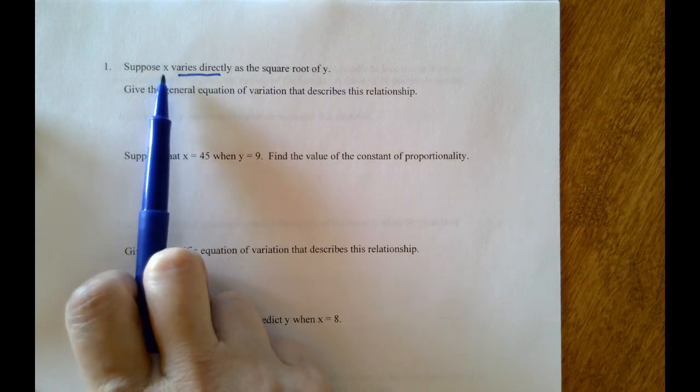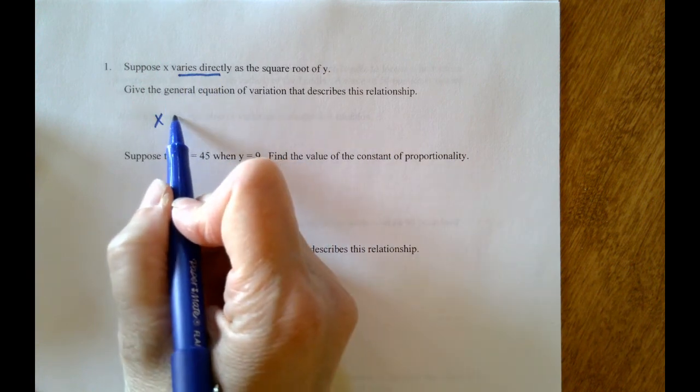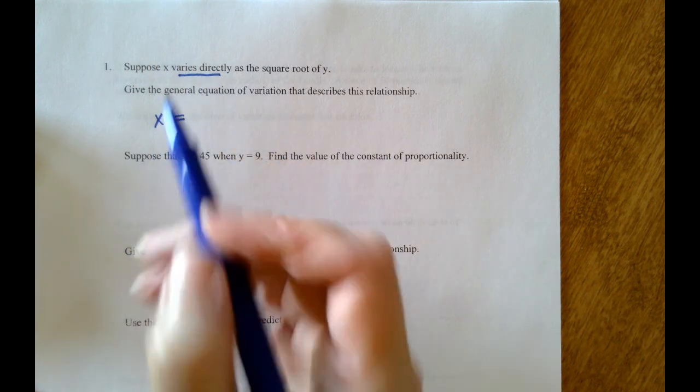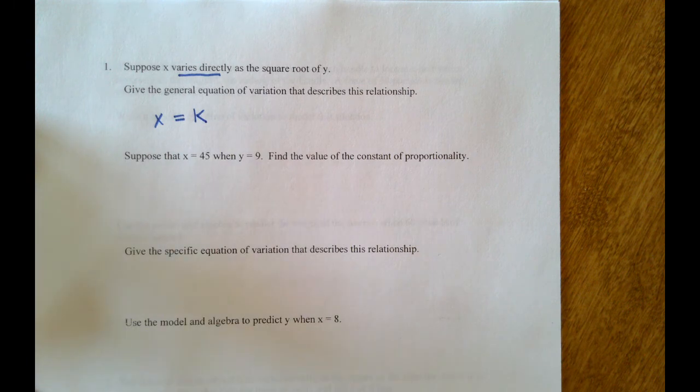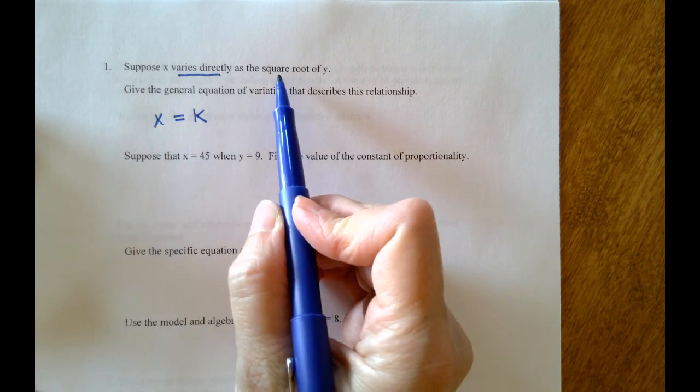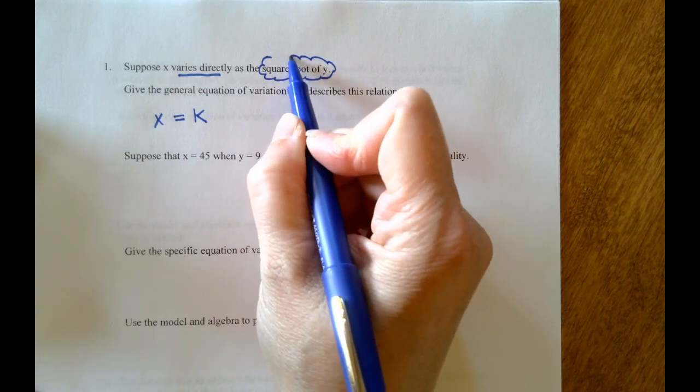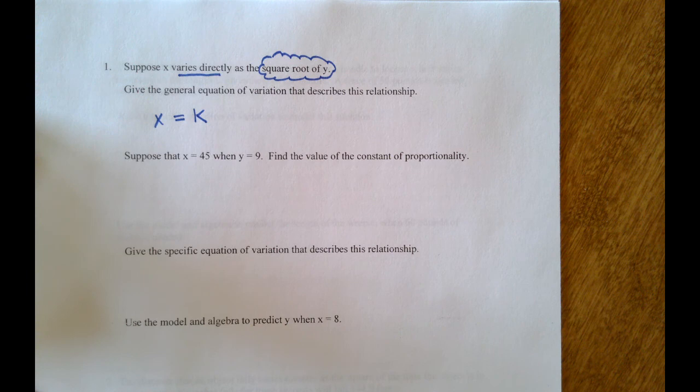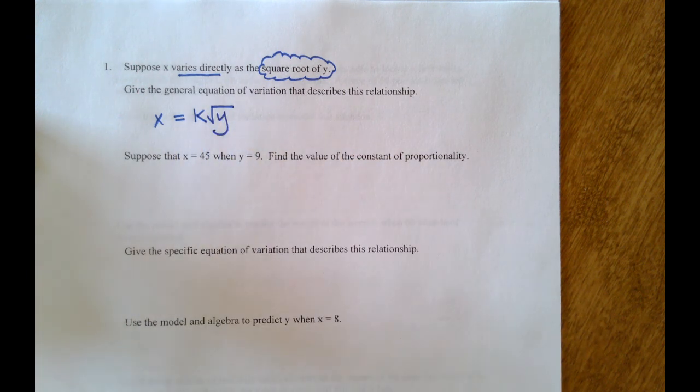The first variable we come across is x. Varies directly is kind of like equals, but it has a little fudge factor to it: this k, this constant of variation. And that k gets multiplied by this second quantity, and the second quantity is the square root of y. And so that's our general equation of variation.